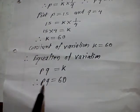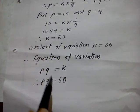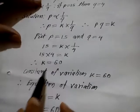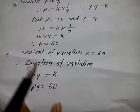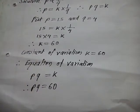This is the equation of variation and this is the constant of variation. K is equal to 2/3 and K is equal to 16.